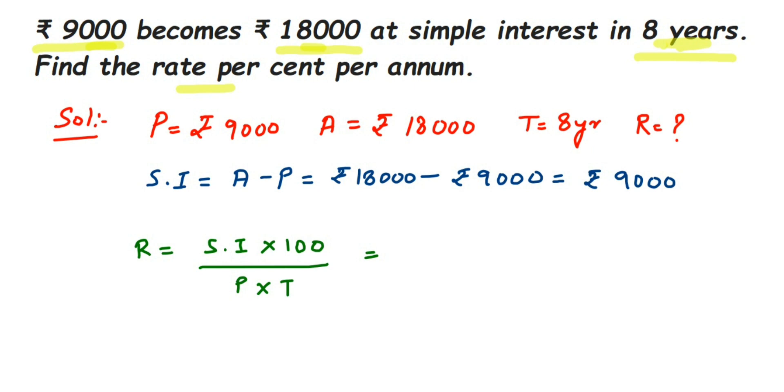...to just substitute and get the answer. Simple interest is 9,000, so 9,000 multiplied by 100, divided by principal, which is 9,000, multiplied by time, which is 8. So 9,000 and 9,000 will get cancelled. Here we'll get 100 divided by 8.